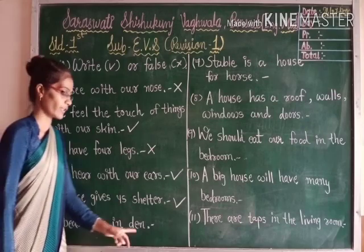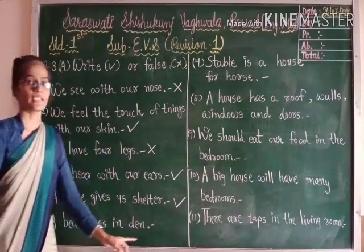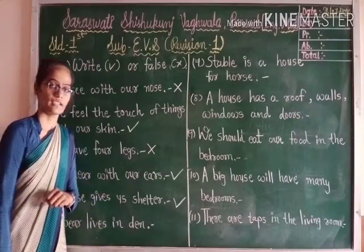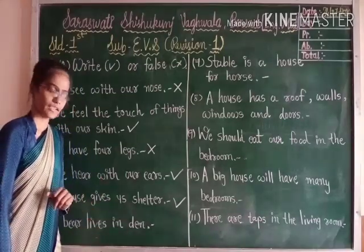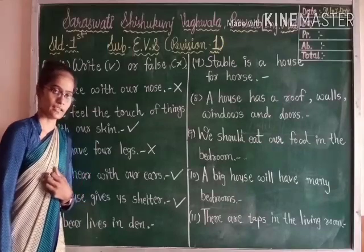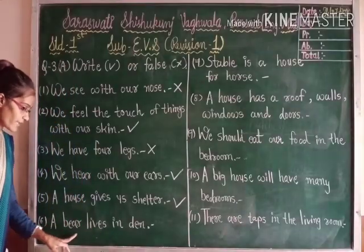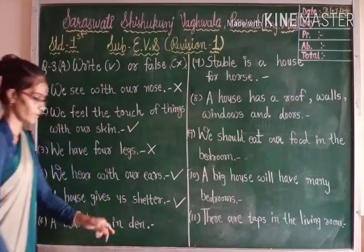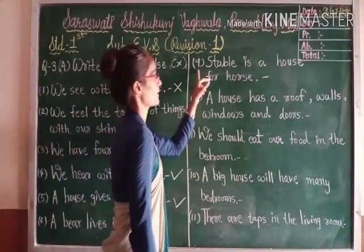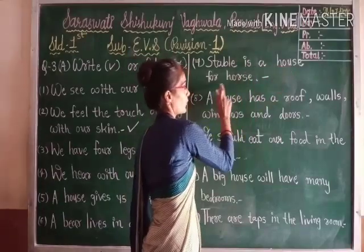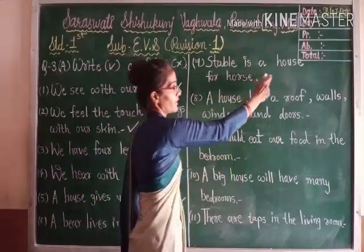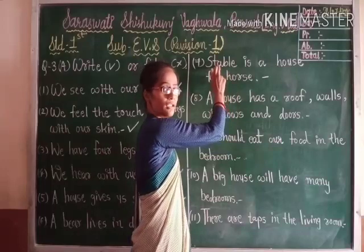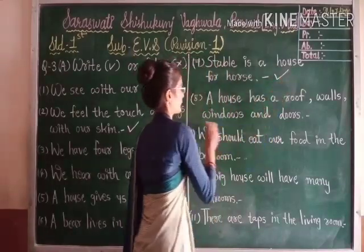Number 6: a bear lives in a den. It is wrong. Why is it wrong? Because a bear lives in a cave, not a den. A lion lives in a den. So the sentence is false. Number 7: a stable is a house for a horse. Yes, a horse's house is called a stable, so it is true.